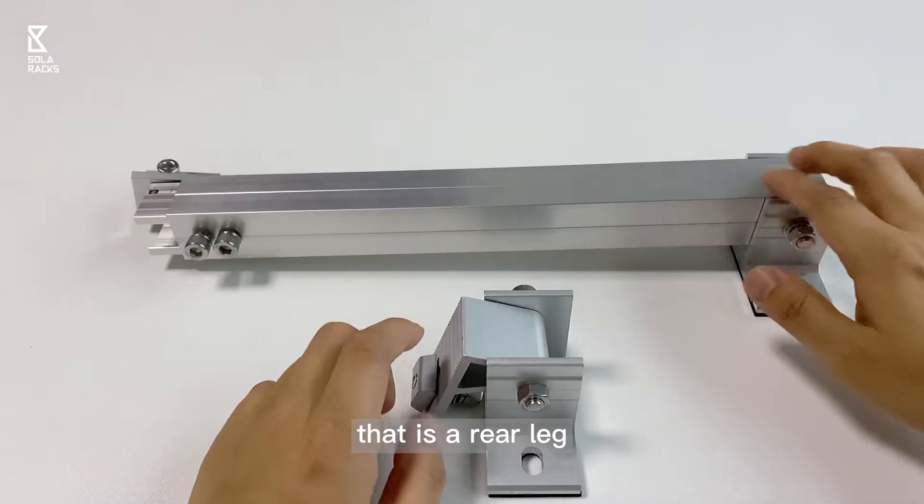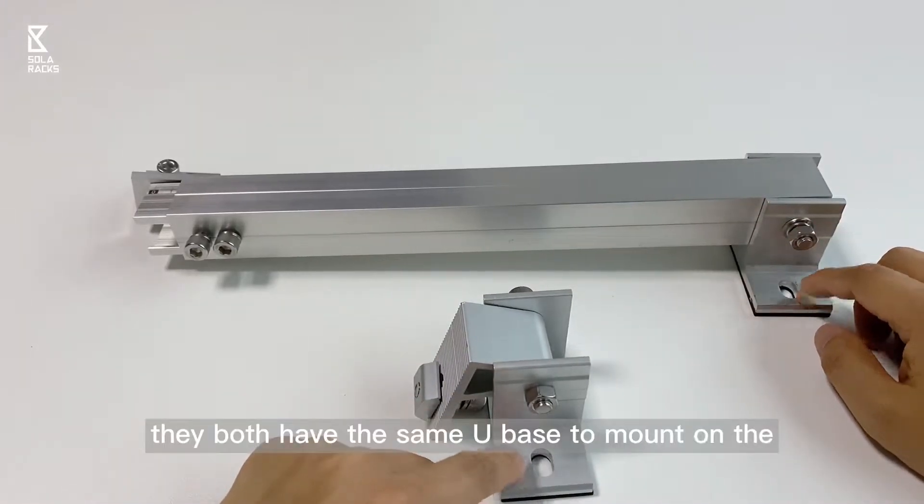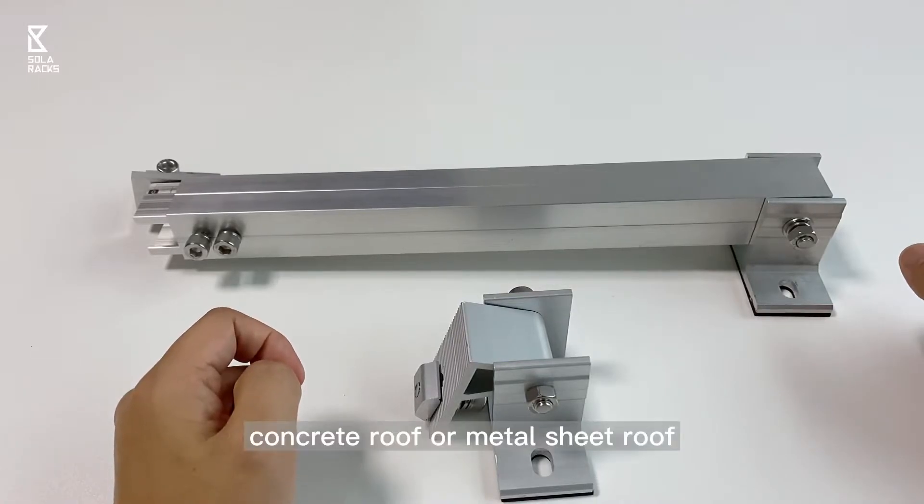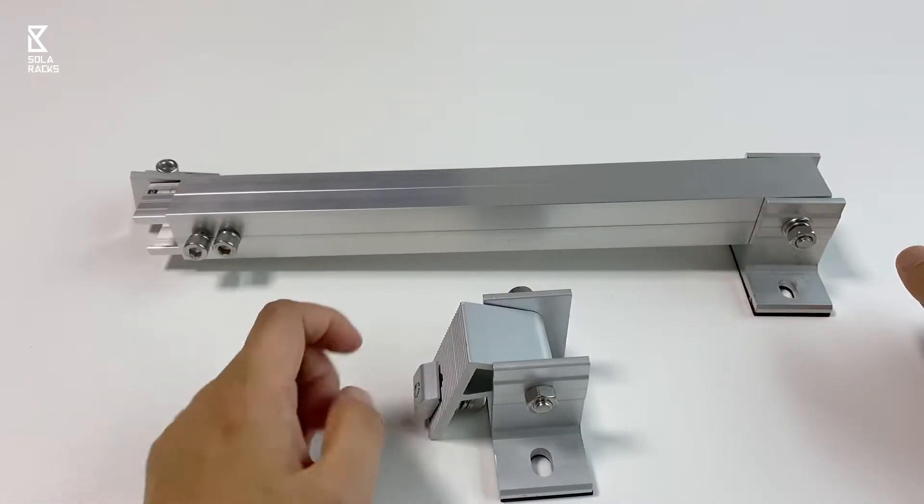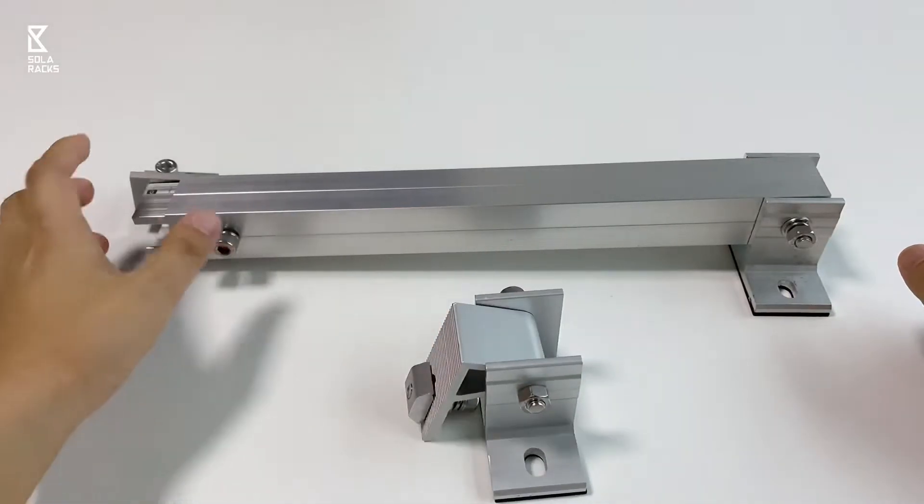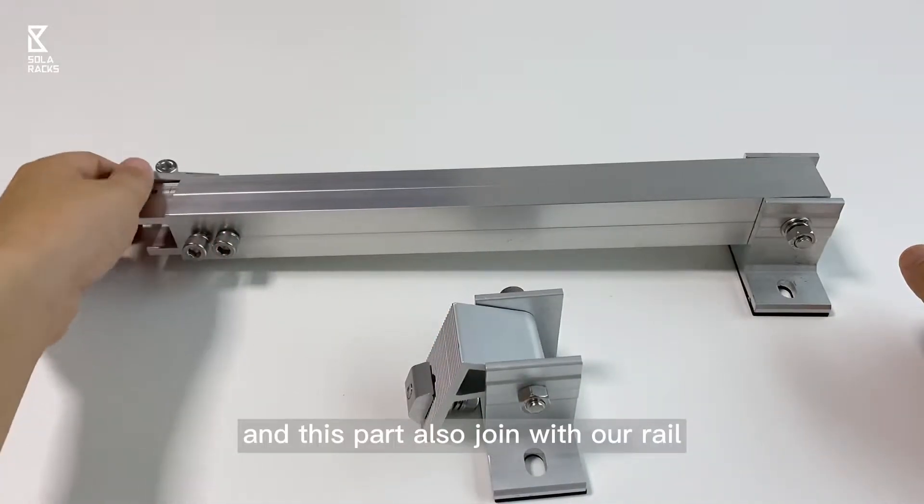This is a front foot, this is a rear leg. They both have the same yield base to mount on concrete roof or metal sheet roof. This is a rotating part to join with the rail, and this part also joins with the rail.